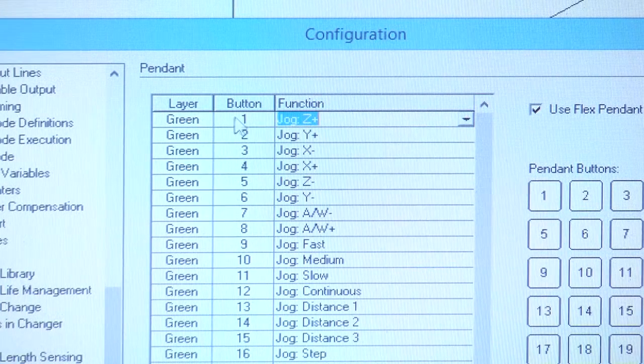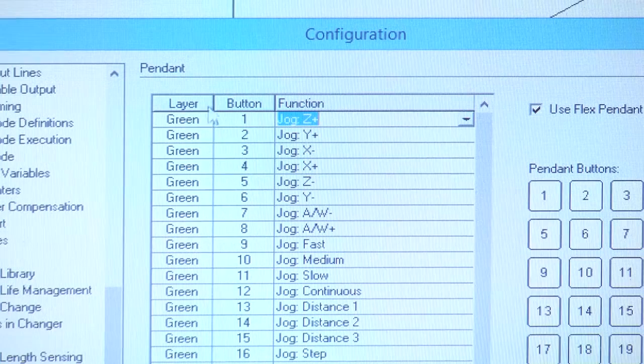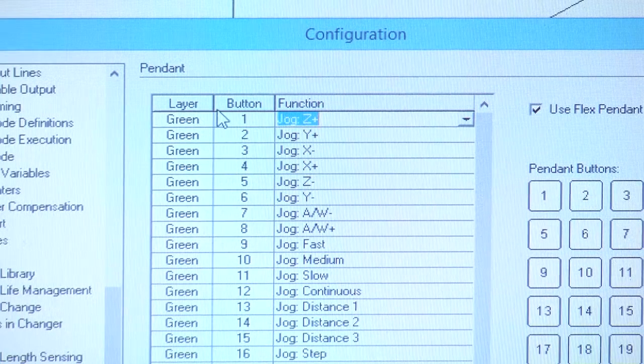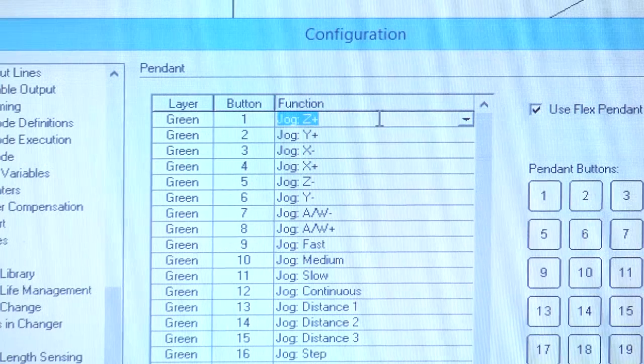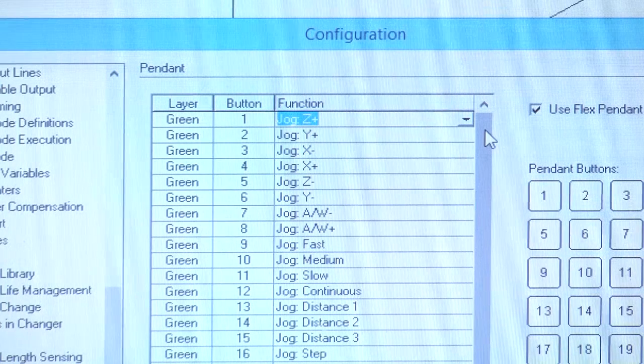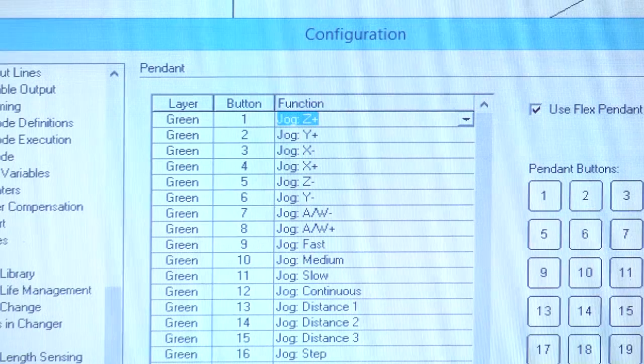You can also see the layer and the button. You'll see in a minute that there's a green and a red layer. This is the equivalent of holding the shift key on a keyboard. It allows you to use multiple functions with the same button. So now that we have all this set up we'll click OK.